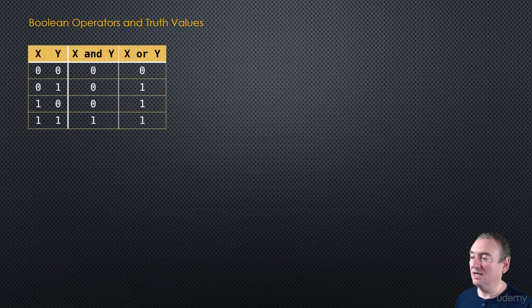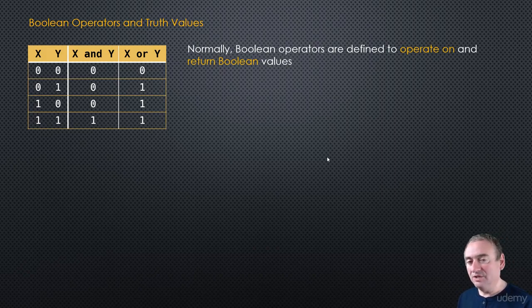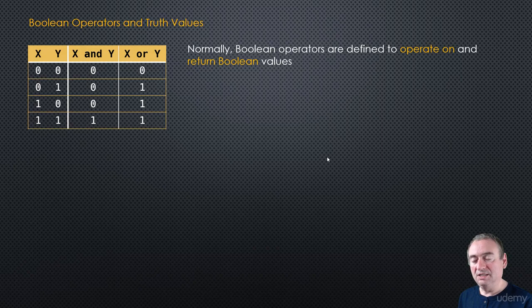Let's just bring back our regular truth table. We have these inputs for x and y, and then we have the result of x and y, and x or y. Normally, Boolean operators are defined to operate on Boolean values and return Boolean values. It's called a Boolean algebra, and AND and OR are just operators in that Boolean algebra, which means these operators are only defined for Booleans and will always return a Boolean.